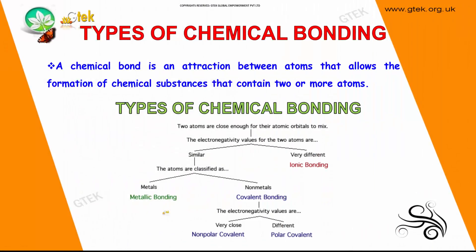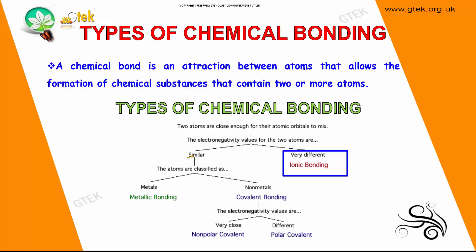When we talk about chemical bonding, a chemical bond is an attraction between atoms that allows the formation of chemical substances containing 2 or more atoms. When 2 atoms are close enough, their atomic orbitals mix. If the atoms are different, it is called ionic bonding. If they are similar and are metals, it is metallic bonding, and if they are non-metals, it is covalent bonding.